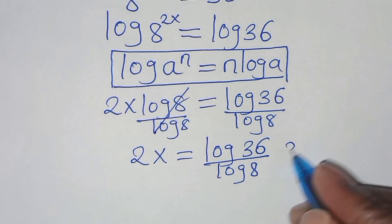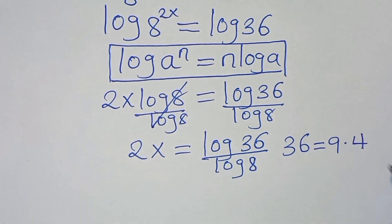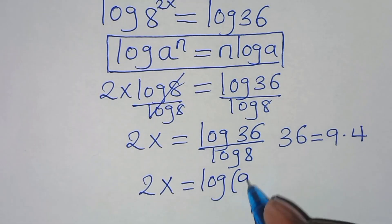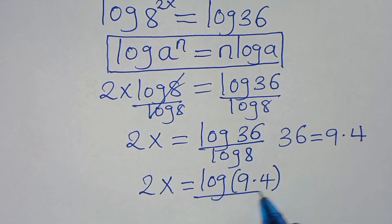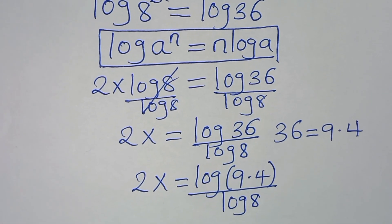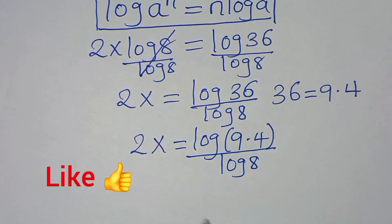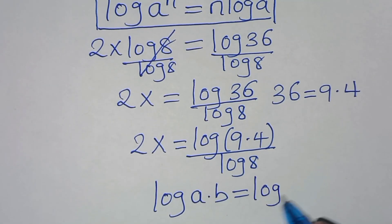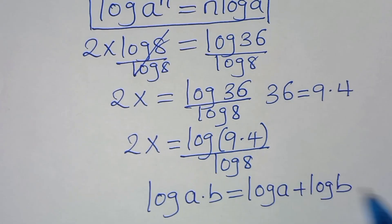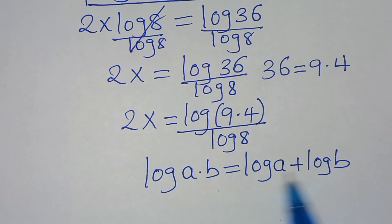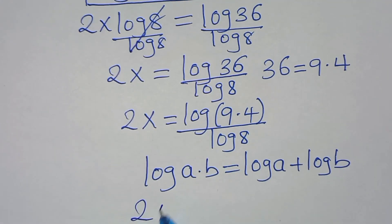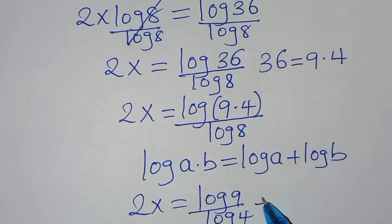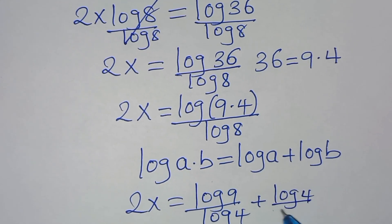The next step: we can express 36 as 9 multiplied by 4, so 2x equals log(9 × 4) divided by log 8. Now, log(9 × 4) is in the form of log(a × b), which we can express as log a plus log b. Applying this logarithm property, we have 2x equals log 9 divided by log 8 plus log 4 divided by log 8.